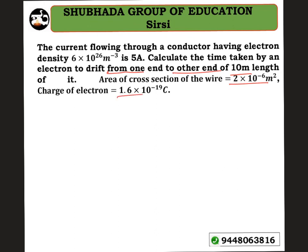Let's substitute the values. First, we need to find the time taken. Time is equal to distance divided by speed. To get the time interval, I need the value of distance — which is given as 10 meters — and also the value of drift speed.